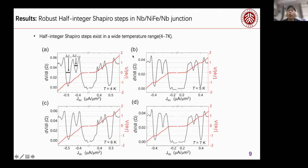Surprisingly, we found that our half integer Shapiro steps are very robust in a wide temperature range, from 4 kelvin to 7 kelvin. You can see from these four figures, the Shapiro steps can be clearly seen from 4 kelvin to 7 kelvin. This is a wide temperature range and has not been reported and observed before. So, in our mind, the half integer Shapiro steps in our strong ferromagnetic Josephson junction are robust.